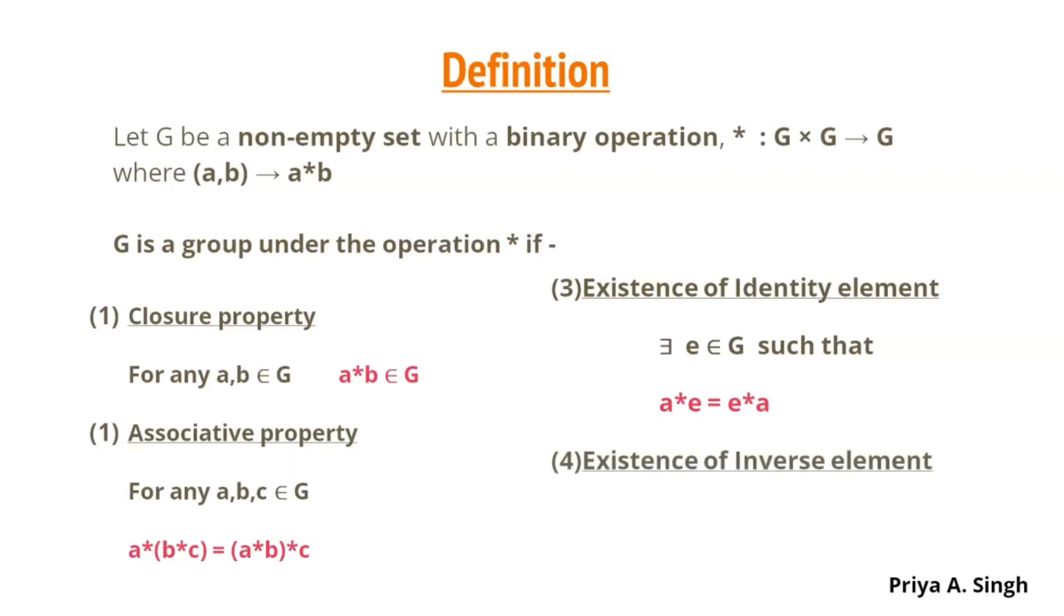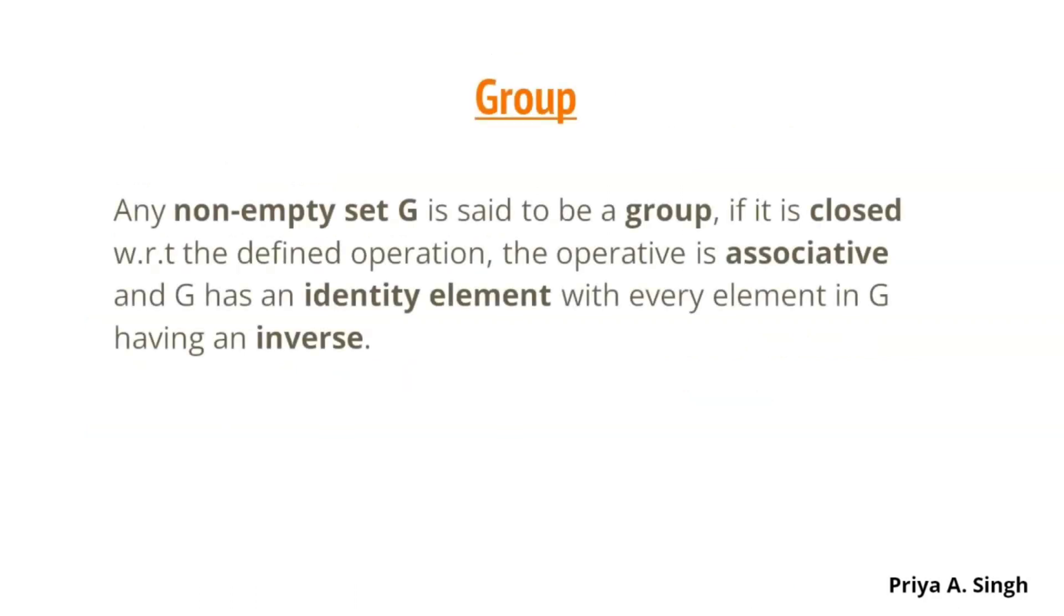Existence of inverse element. For every element A in G, there exists an element B in G such that A star B is equal to E, the identity element, and B star A is equal to E. Thus, in short, any non-empty set G is said to be a group if it is closed with respect to the defined operation, the operation is associative, and G has an identity element with every element in G having an inverse element. If G is a group under the operation star, we can say that (G,*) is a group.